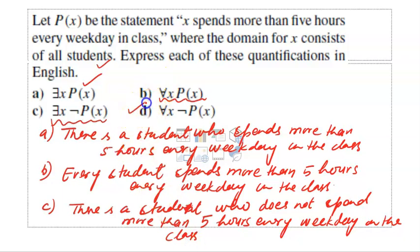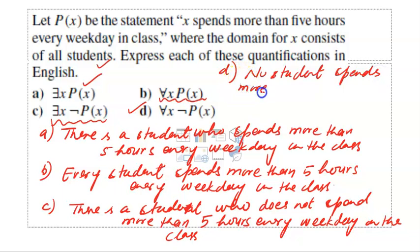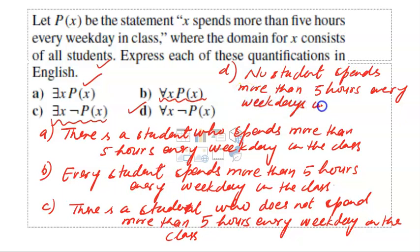The final statement (d): for all x, ¬P(x) means the negation of P(x) is true for every x. The translation is: no student spends more than five hours every weekday in the class.